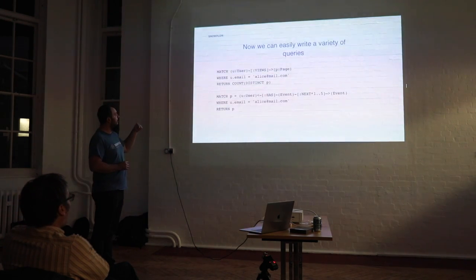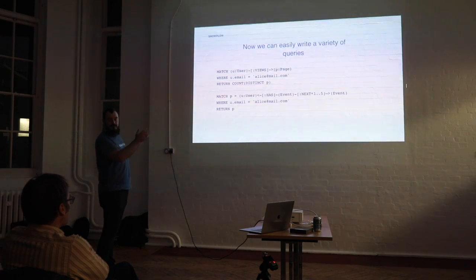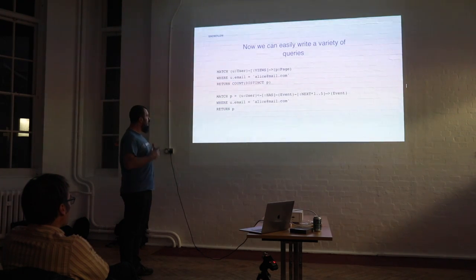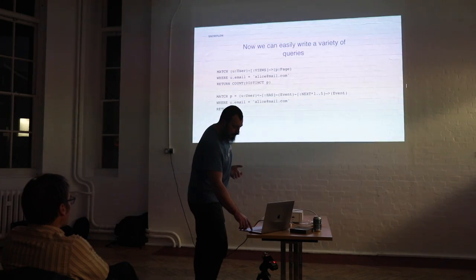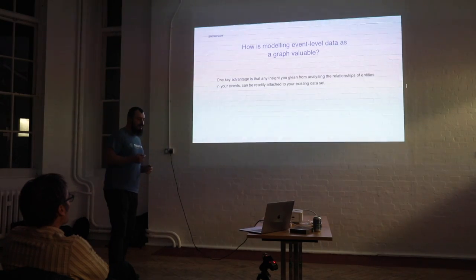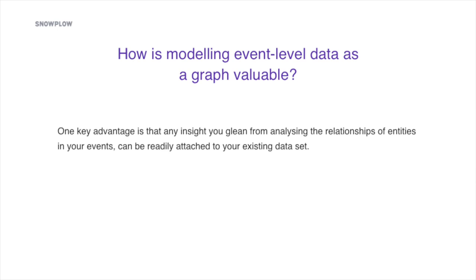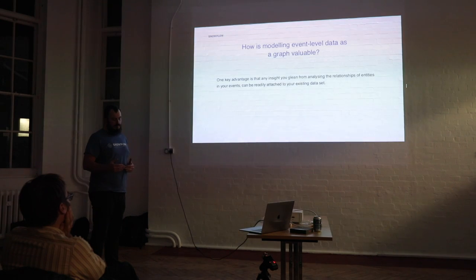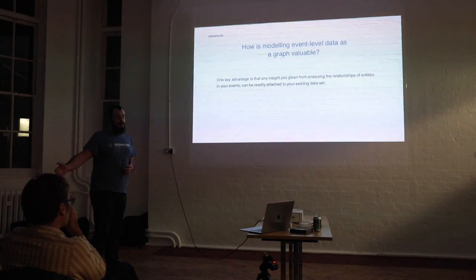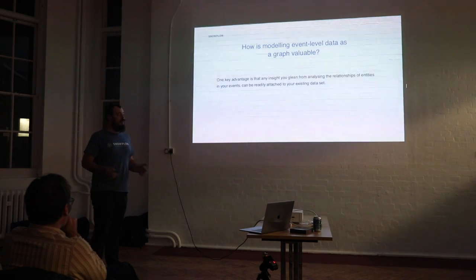So that gives you an indication that putting event-level data in a graph database is not as simple as just picking the database and plugging in the data. You have to be very deliberate about how you model it. The decisions you make upfront can hurt you later — if you make the wrong choice at the start, you might discover that a critical query is very hard to run. What do you do then? Rebuild the graph from scratch? It might be unavoidable.